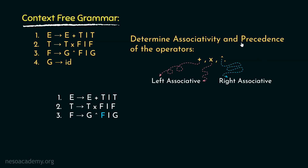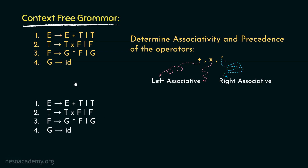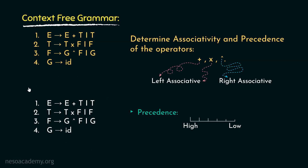Since we are done determining the associativity of the operators, let's now figure out the precedence order. In order to determine the precedence, we need to judge all the production rules at once. We will determine the precedence order in a decreasing manner — from high to low. Among all these production rules, the third one has got the caret operator, so its precedence is the highest.